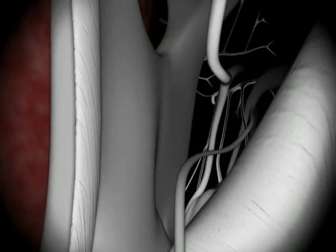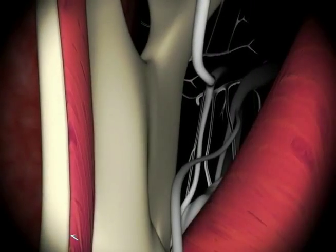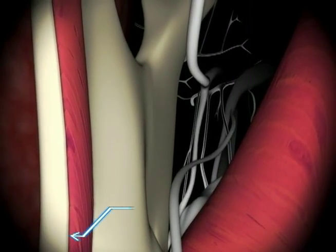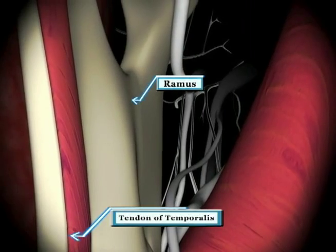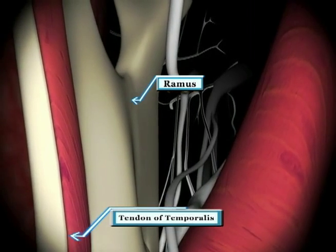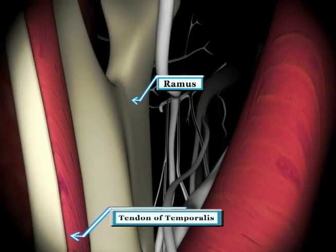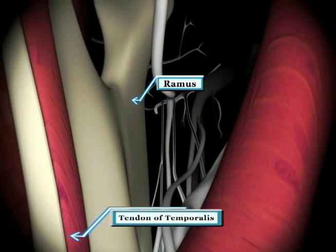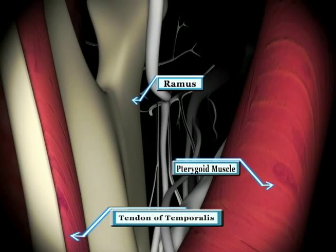A few millimeters later, we see the deep tendon of temporalis attaching to the medial aspect of the mandibular ramus. For the remainder of the tour, we'll be traveling close and parallel to the mandibular ramus. The relatively large medial pterygoid muscle will be just medial to the needle.